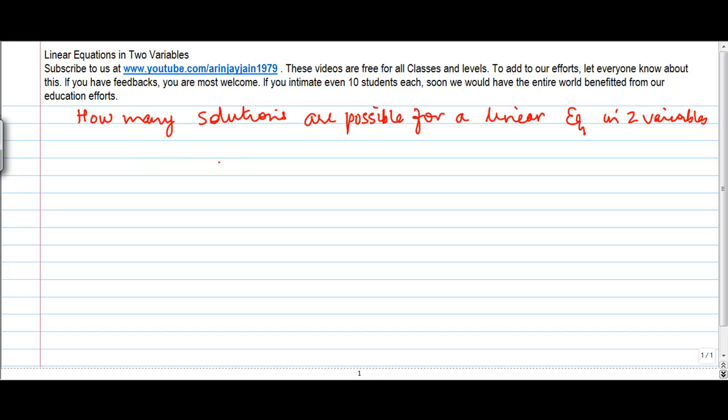Let us say you have a linear equation 2x plus 7y plus 4 is equal to 0. Suppose this is a linear equation in two variables that you have. Then you can say that 2x plus 7y is equal to minus 4.